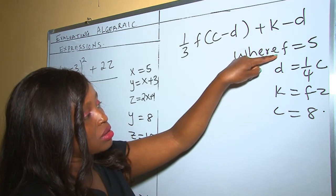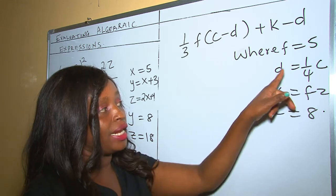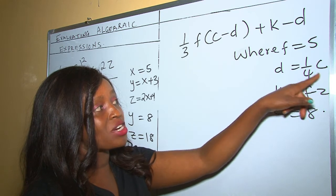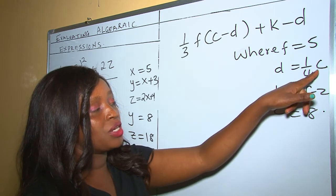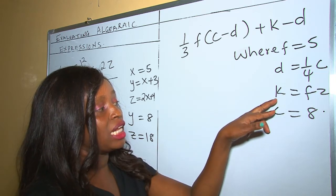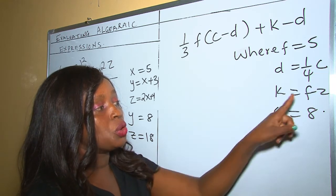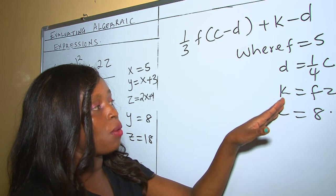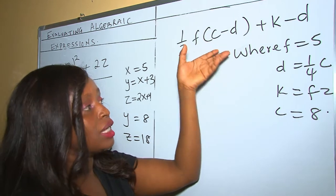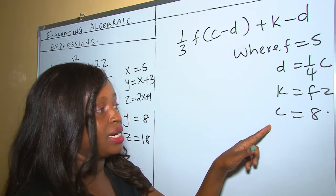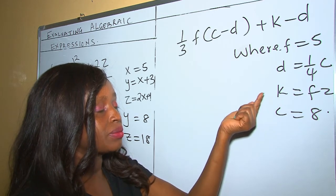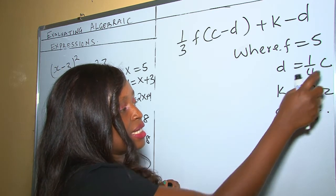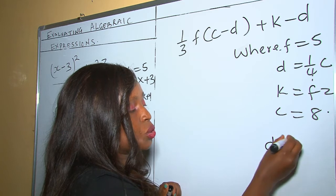Let's try another example. In this example, the values are still dependent on each other. As you can see, D equals a quarter of C. For us to get D, we need to know the value of C. Also, K equals F take away 2, and we need the value of F to get K. So first, let's deal with the values and get the exact value of each term. D equals a quarter multiplied by C, and our C is 8.